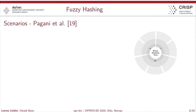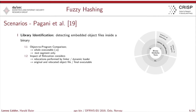The first scenario is the task of library identification: you try to detect embedded object files inside of a binary. There are two subtasks. First, the object-to-program comparison, where you compare a whole object file or only the text segment of an object file with the final executable. Second, the impact of relocation, where you compare the original relocated object file with the final executable.